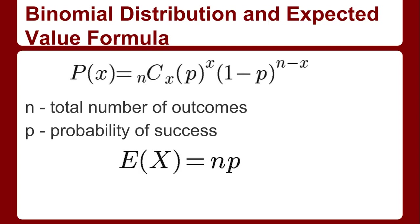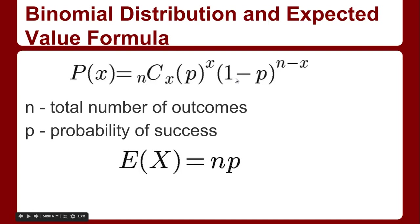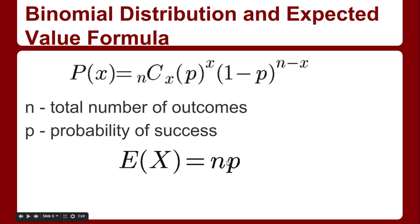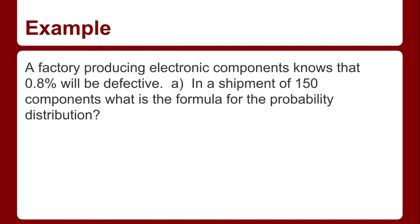So we actually get two formulas. The first is the binomial formula: n choose x, times the probability of success to the x, times the probability of failure to the n minus x. Here n is the total number of trials and n minus x is the remainder. The expected value formula is very simple: it's just the number of trials times the probability of success. So one-sixth times 3 trials gives 0.5.